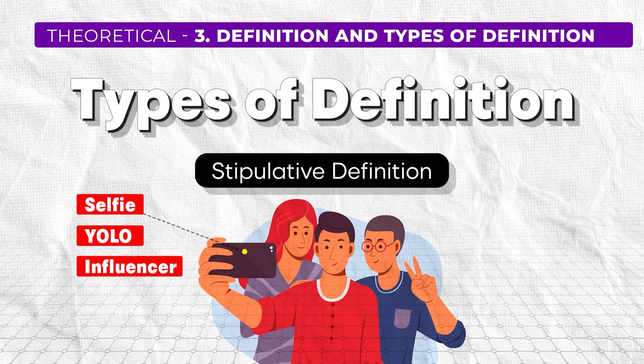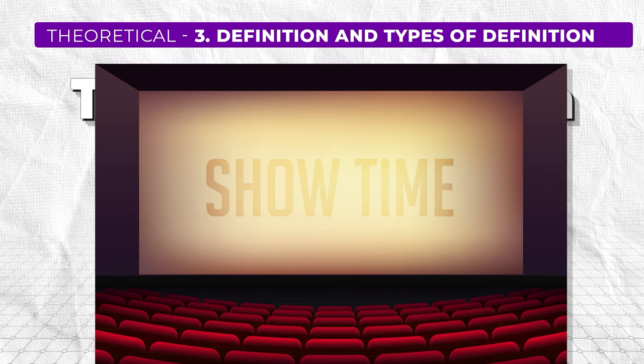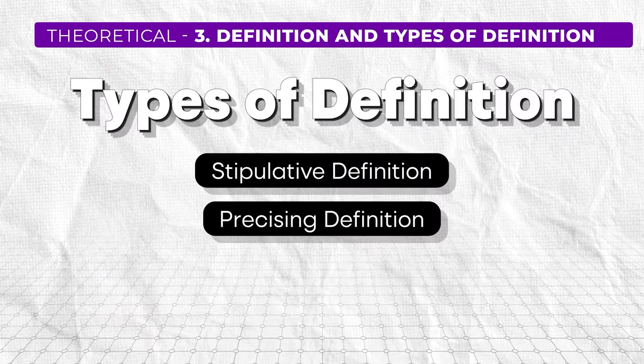These are words that didn't exist a few years ago. The next kind of definition is precising definition. For example, when we go to watch movies in theatres, it is written that students must show their ID cards. Here the word 'student' reflects any person who is below the age of 18 years. Rather than writing 'below the age of 18 years must show their ID cards,' they write 'students must show their ID cards.' So the definition of a student may be different in a movie theatre than in a school — it's a definition used for that particular situation.